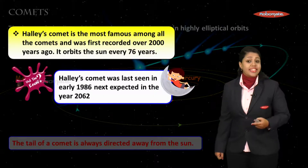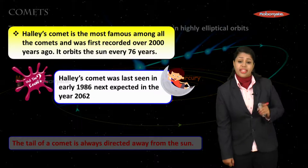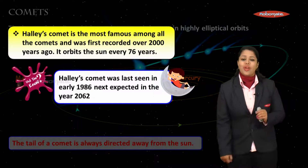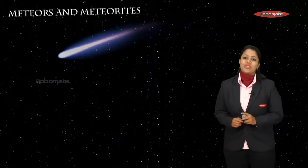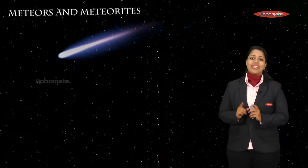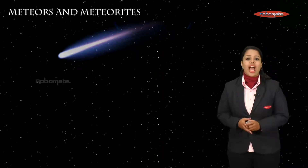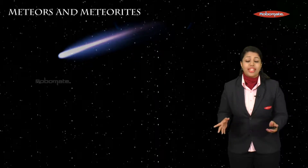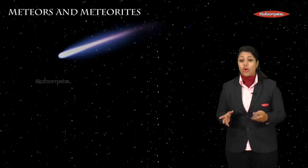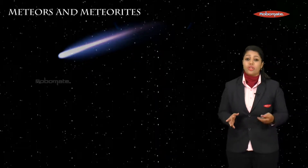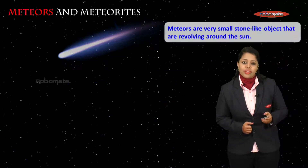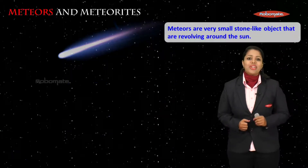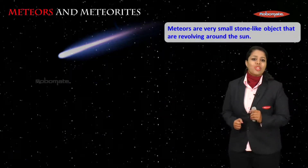Halley's Comet was last seen in the year 1986 and is next expected in the year 2062. Coming to the next member of our solar system — meteors and meteorites.